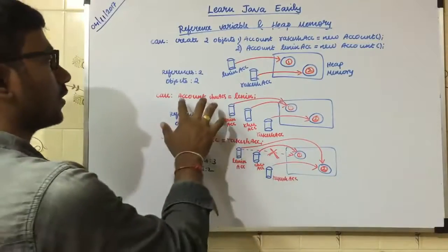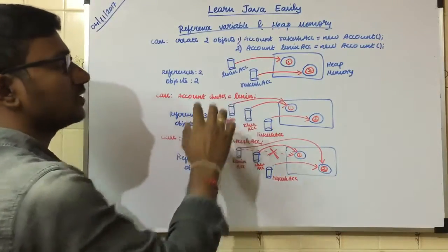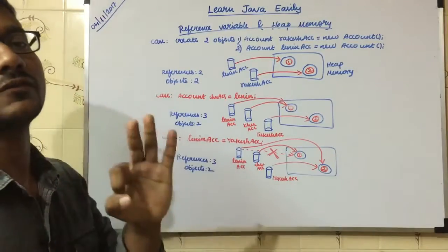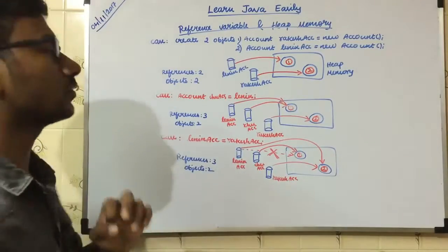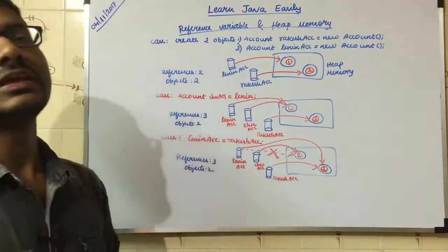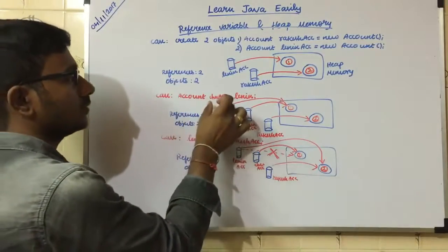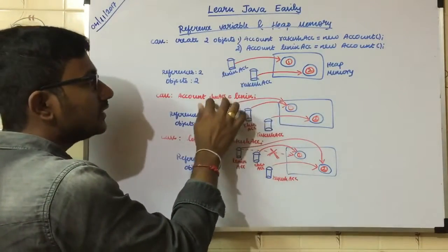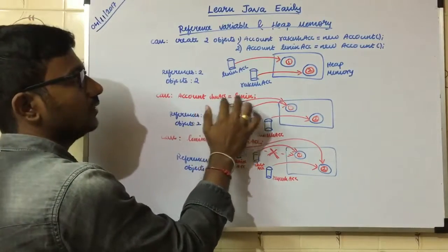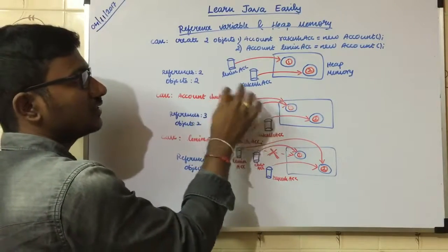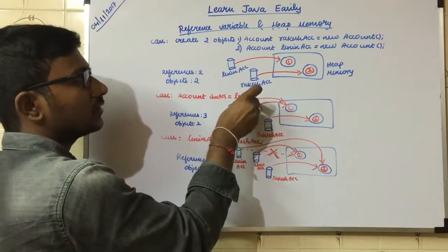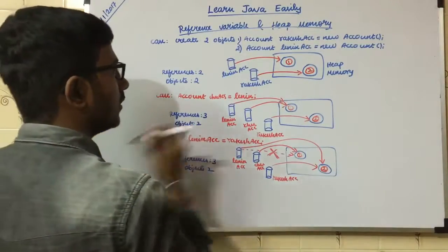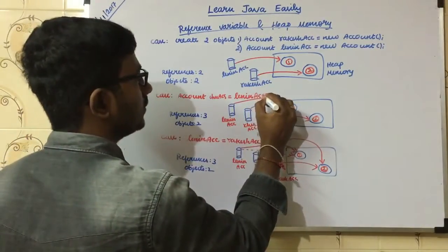Second case: Account is the third object. The third reference variable points to the third object — we are going to create a new object. Here, this is a reference variable. This is an already existing reference variable. This is the lending ACC reference variable.